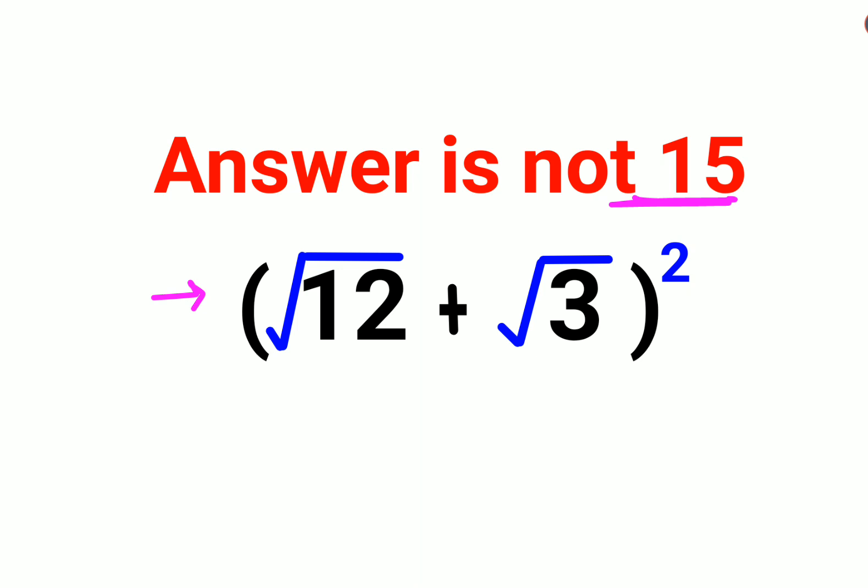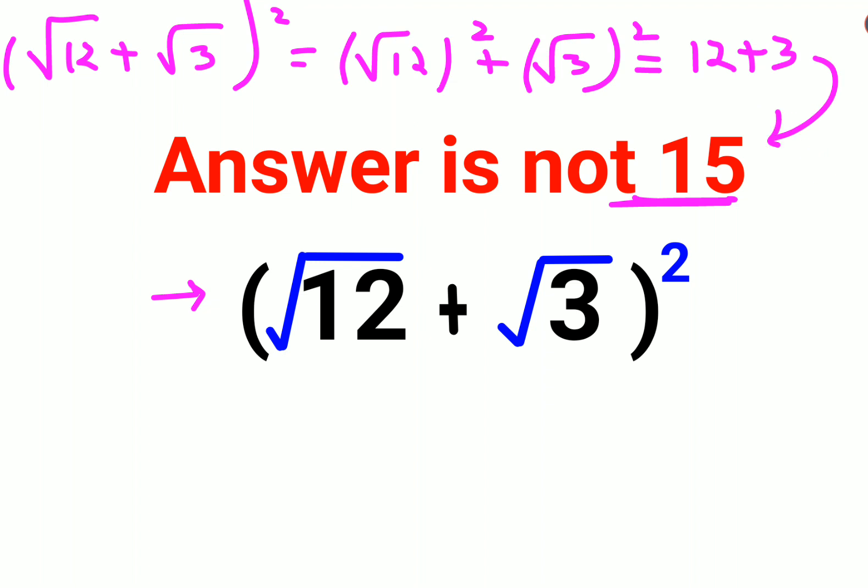A lot of people thought that (√12 + √3)² equals (√12)² + (√3)². That's when they got 12 plus 3, and that's how they got the answer as 15.